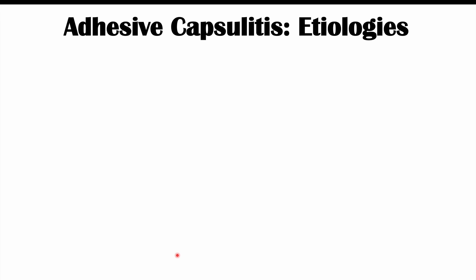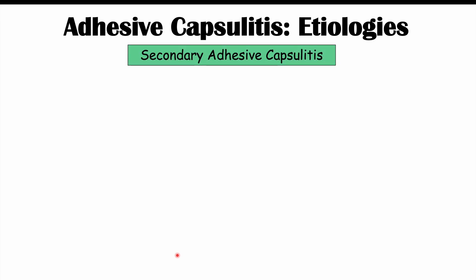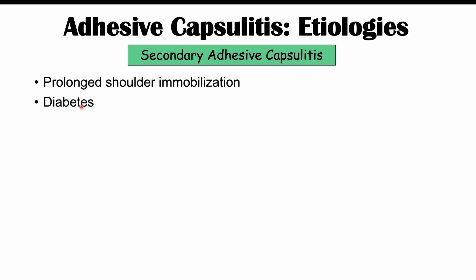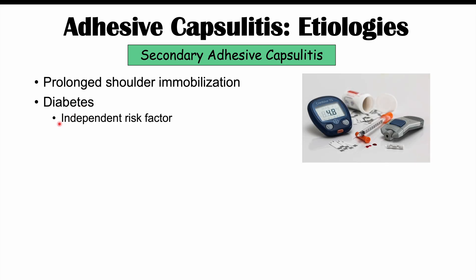Let's talk about the etiologies of secondary adhesive capsulitis. Primary adhesive capsulitis is idiopathic, but secondary has a wide variety of causes. One important cause is prolonged shoulder immobilization — when the shoulder is not moved for a very long period of time. Diabetes is also an important independent risk factor, shown to increase the likelihood of adhesive capsulitis by nearly five times compared to non-diabetic patients.